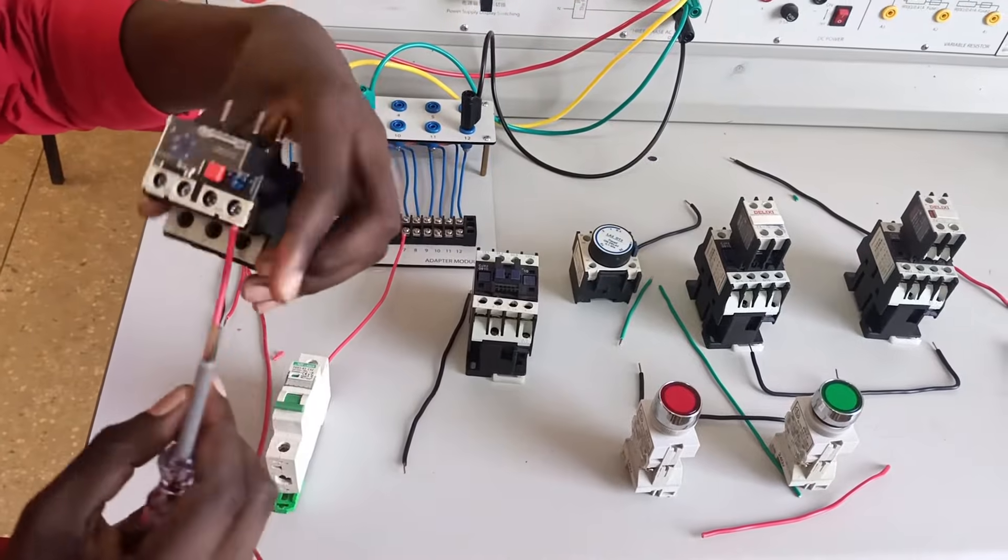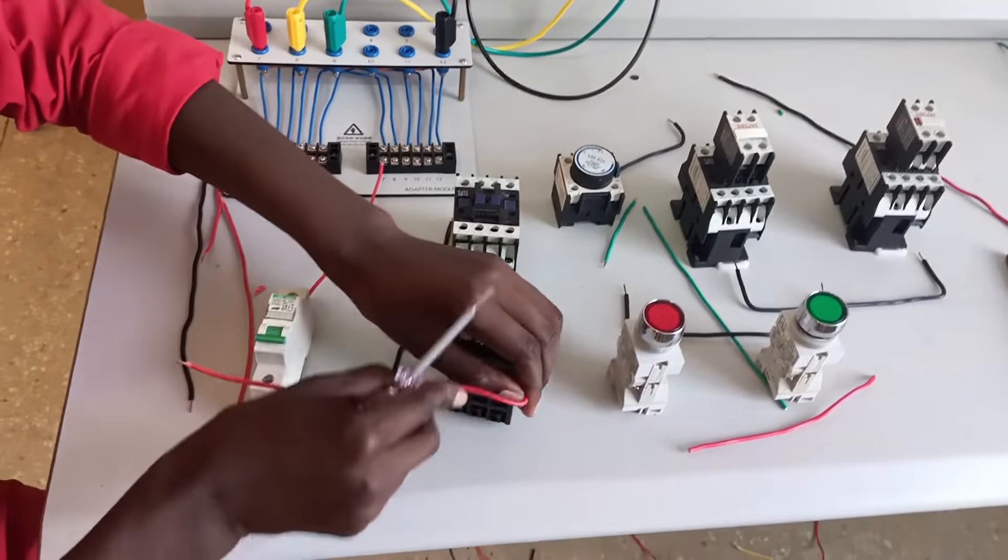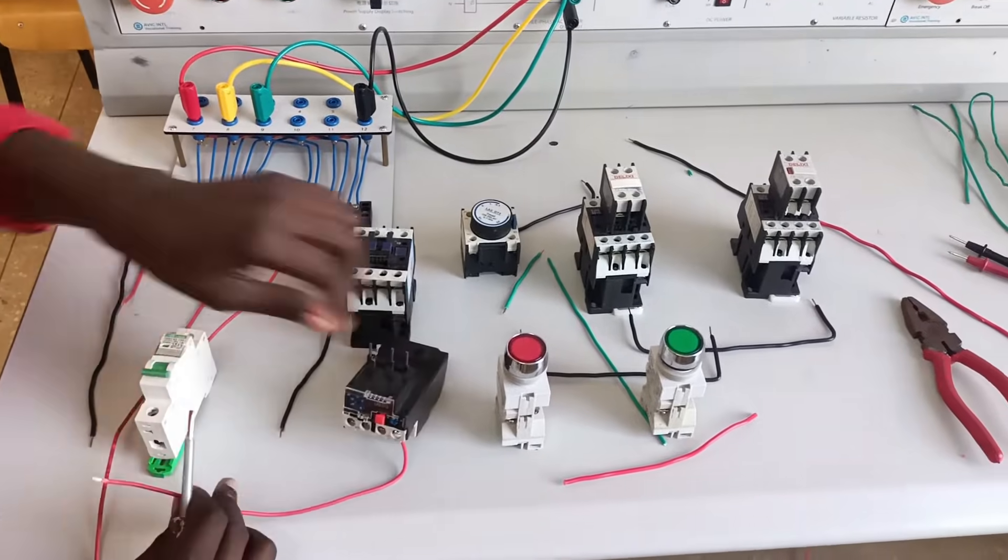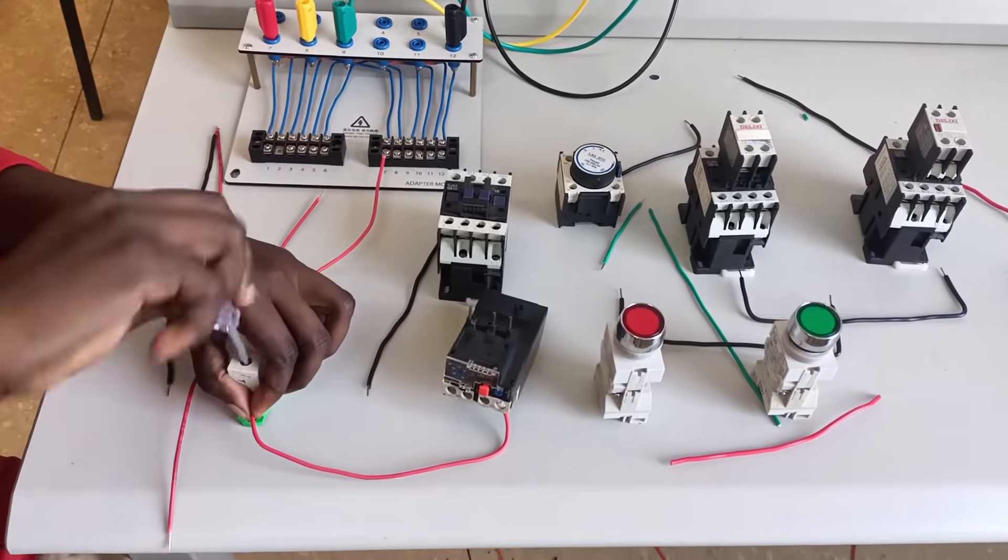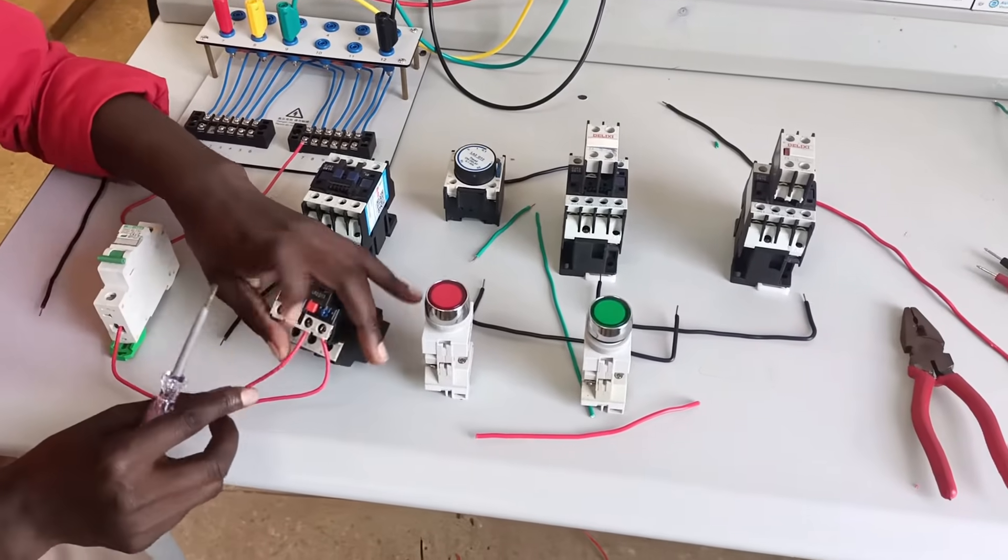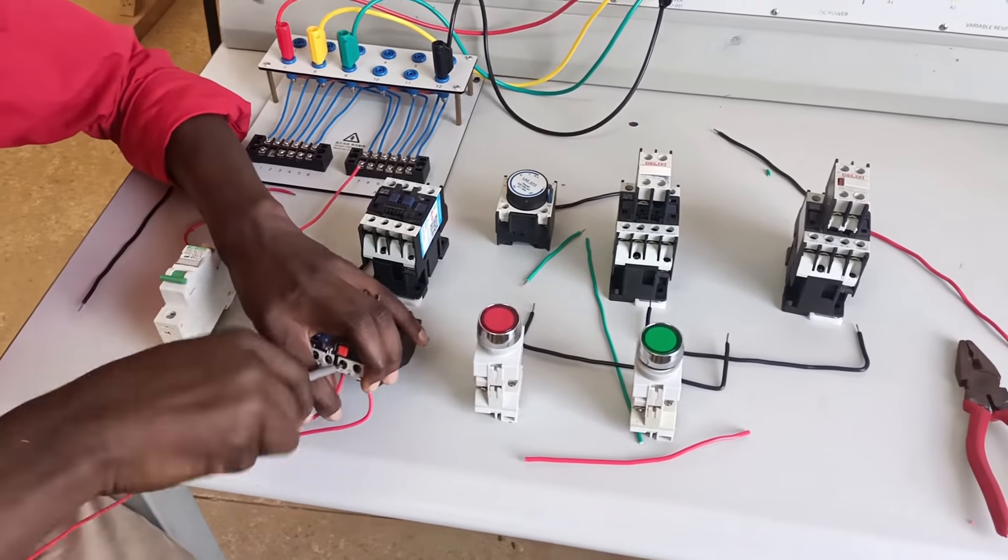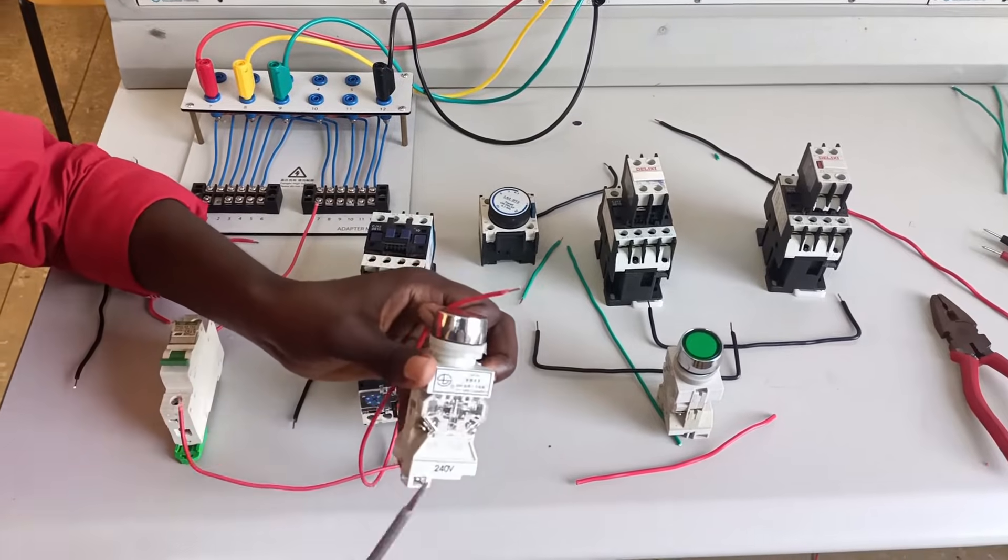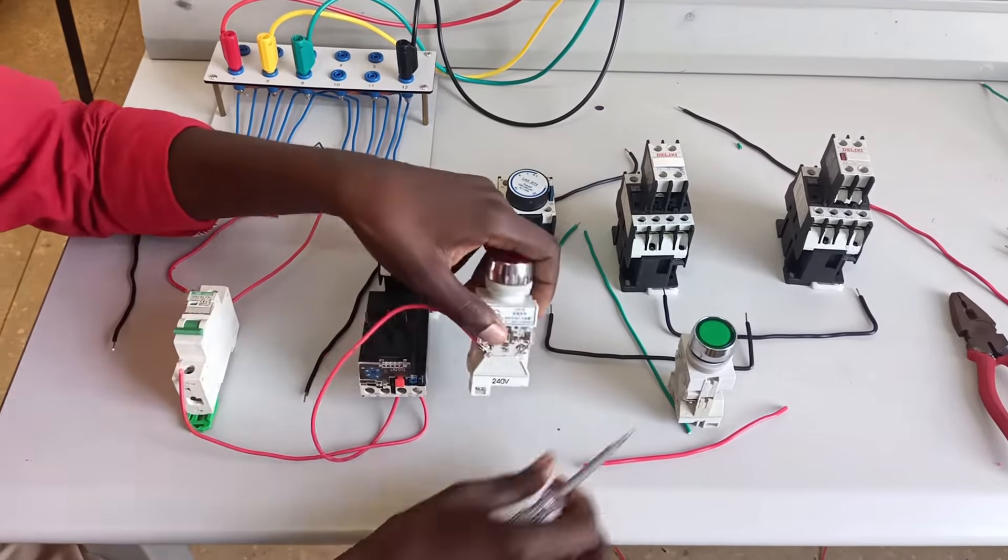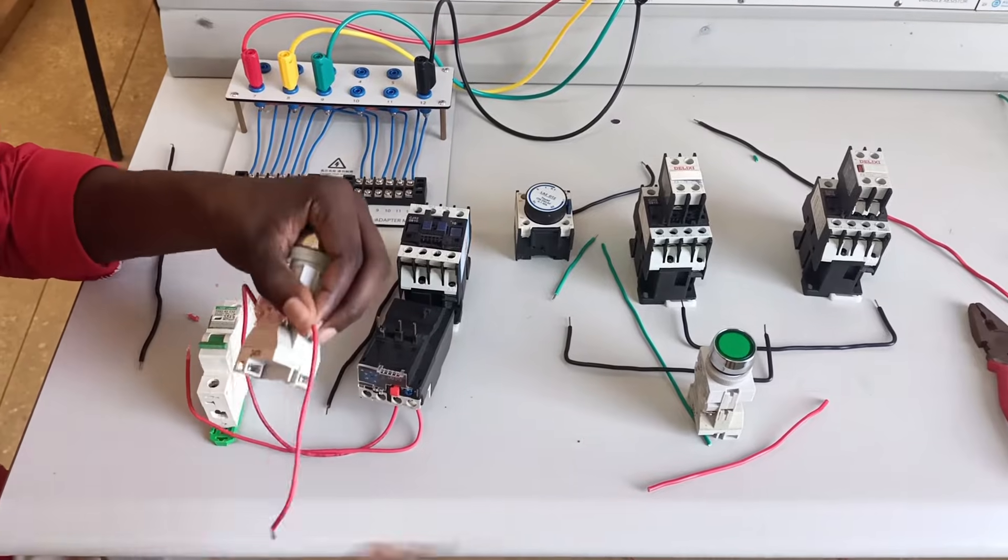From the thermal overload relay to the circuit breaker, that's pin 95, and then pin 96 of the thermal overload relay will connect to the NC push button, that's the stop button, the one you see in red. So that's pin 96 of the thermal overload relay. For this case, those are the two contacts we are going to use in the thermal overload relay.